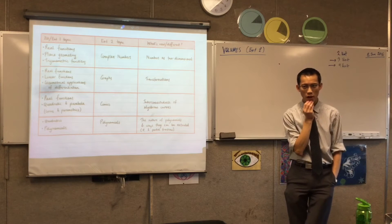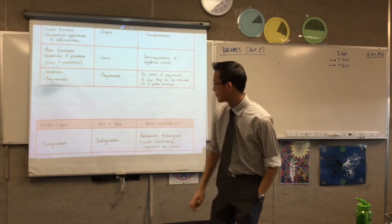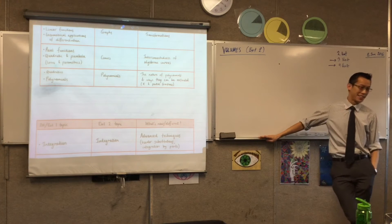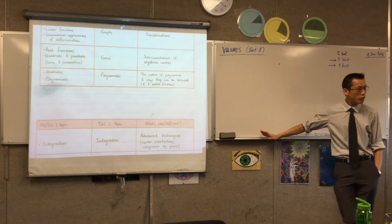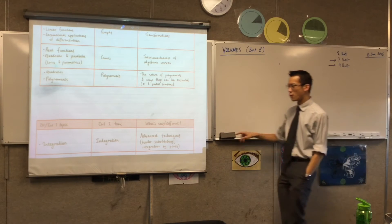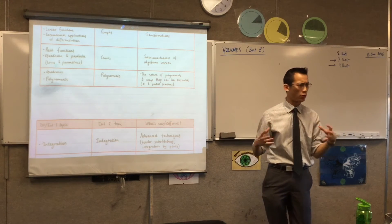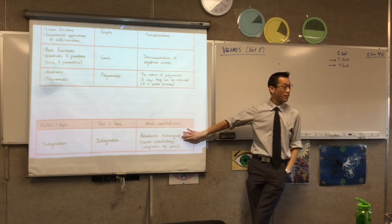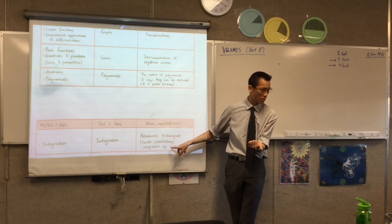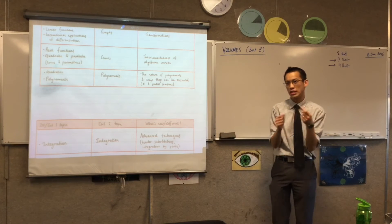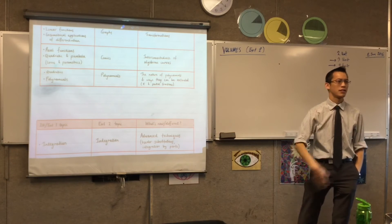Why do we do partial fractions? To help with the next topic. So our last Extension 2 topic was integration, which follows from 2-unit and Extension 1 integration. The real characteristic of that topic is that if we have all these new tools, it opens up all these more difficult integrations we can deal with - so-called advanced techniques. Substitutions like the t-result, which you'd met before but never used in the context of integration. There were some really hard substitutions you had to work out yourself. And of course, integration by parts, which gave you recurrence relations.